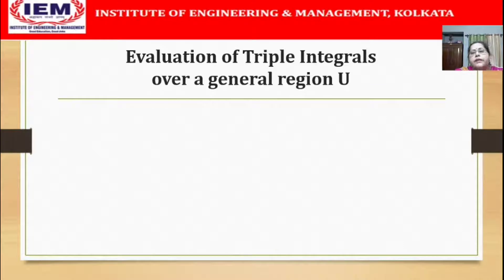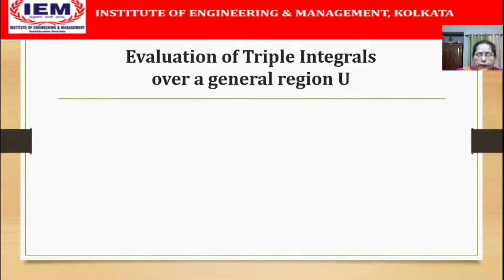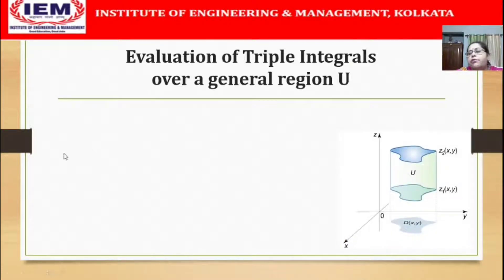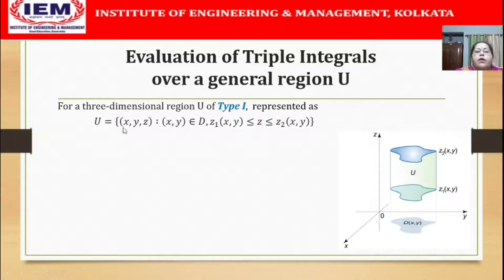We have seen that the general region U may be classified as type 1, type 2, or type 3 region depending on whether the projection of the region lies on the xy, yz, or zx plane. Here is the type 1 region where the projection lies on the xy plane and the region is bounded below by a surface z1(x,y) and above by a surface z2(x,y). This is the region represented as the set of points (x, y, z) where (x,y) belongs to D and z lies between z1(x,y) and z2(x,y).